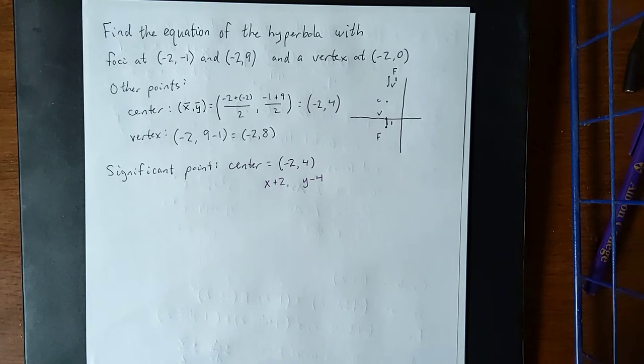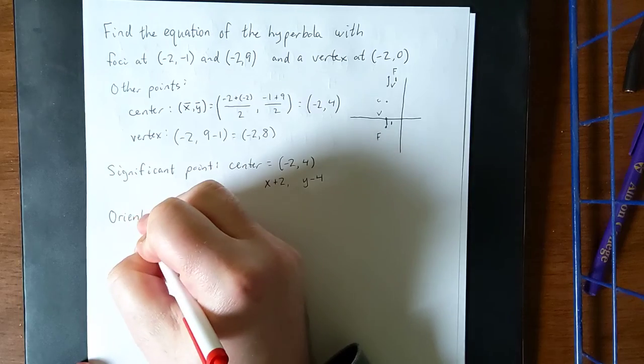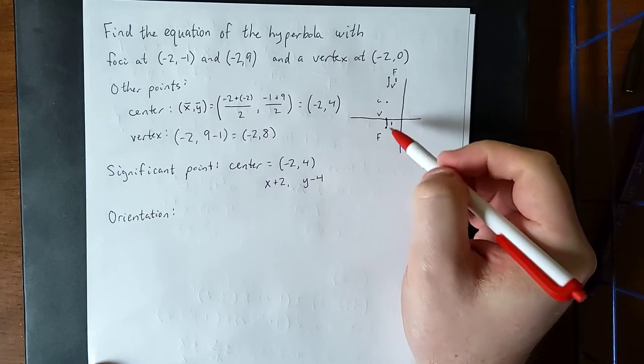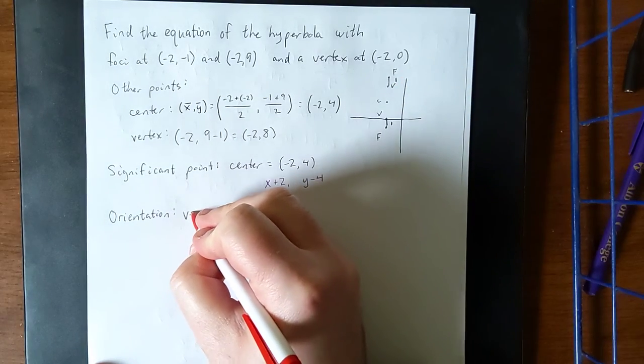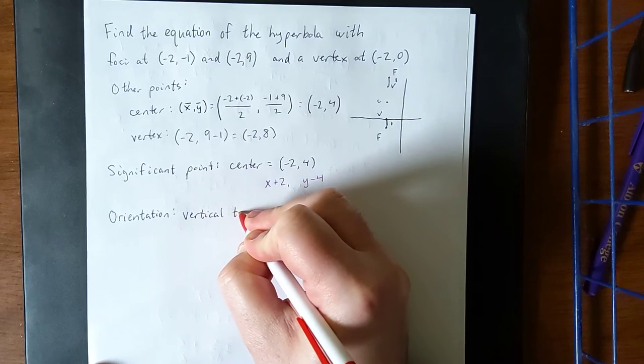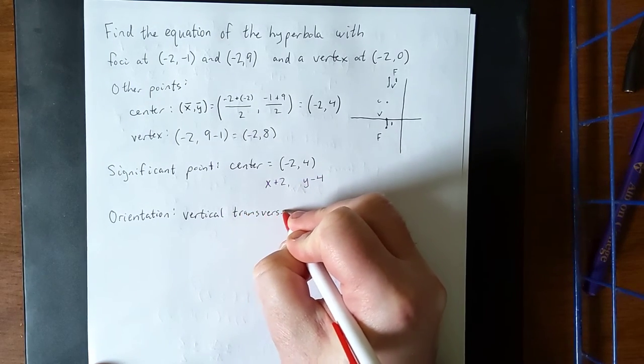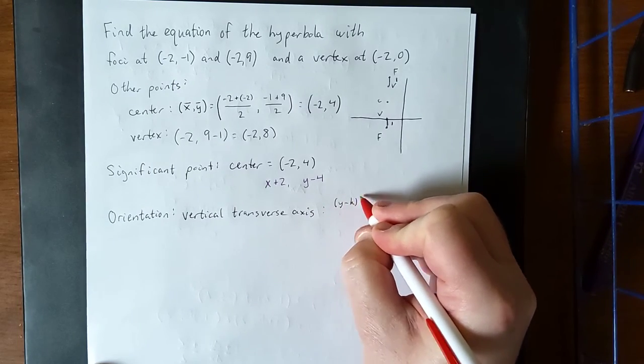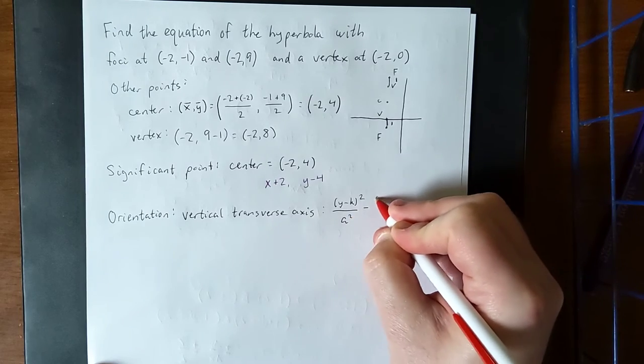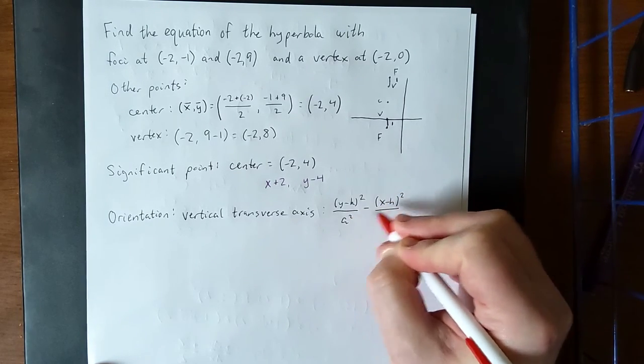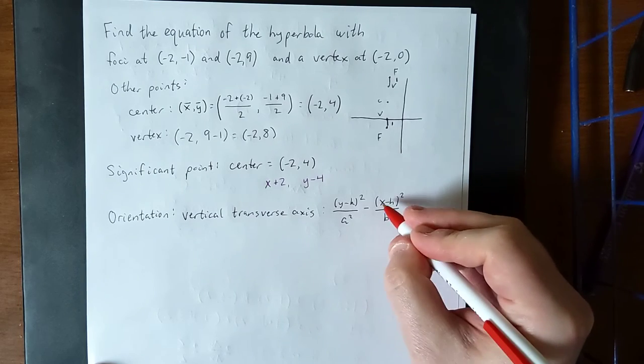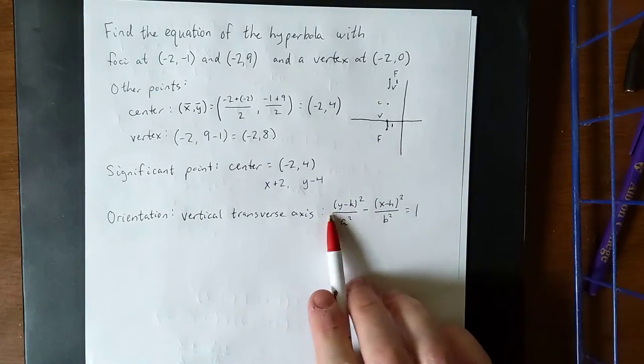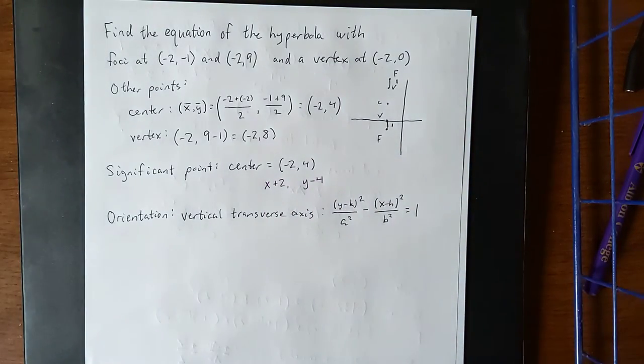Next up, the orientation of the hyperbola. We can see all five of these points lie on the same vertical line, so this one is going to be a vertical transverse axis. The vertical transverse axis lets us know that the standard form of the equation of this hyperbola is going to see the y variable above the a value and the x variable above the b value. The thing that we'll see inside these parentheses will be an (x + 2) and a (y - 4) once we get to it.